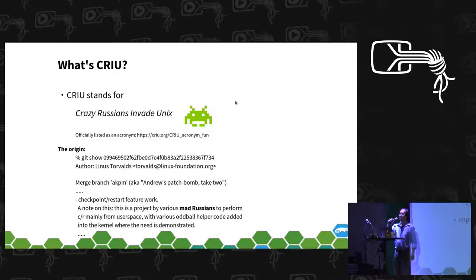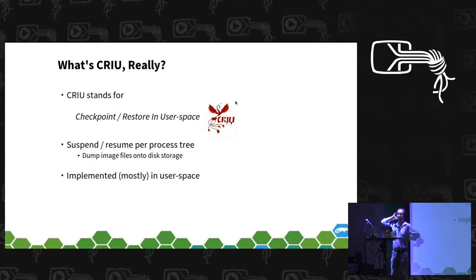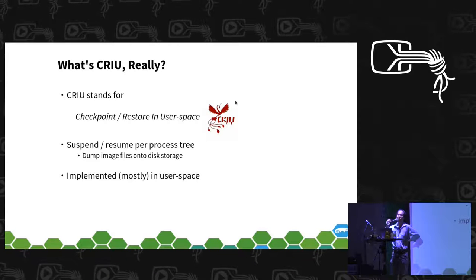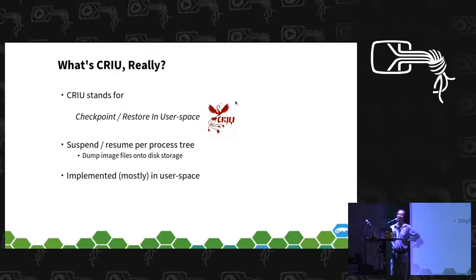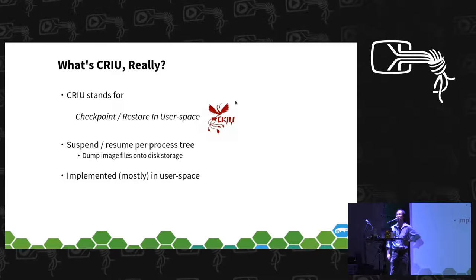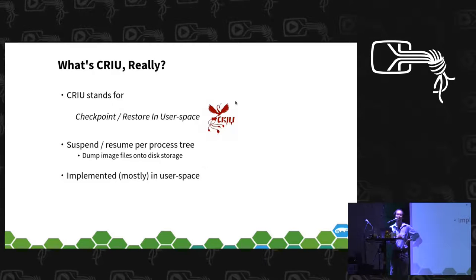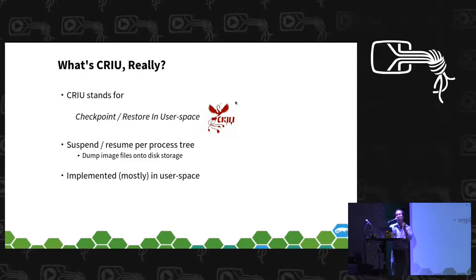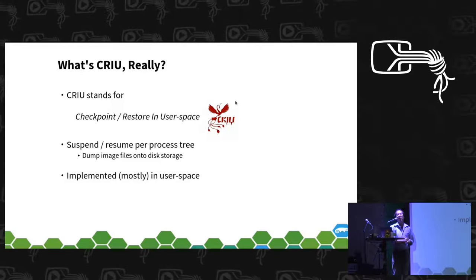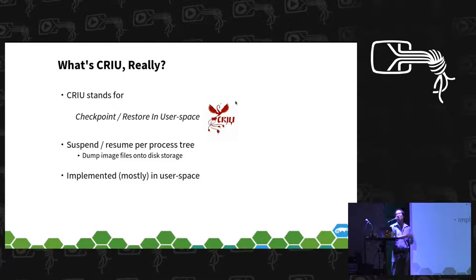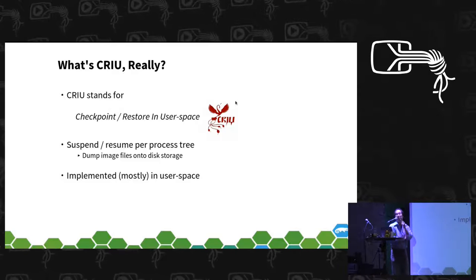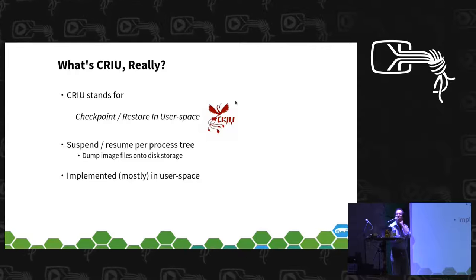The answer was correct. CRIU actually stands for Checkpoint/Restore In Userspace. This is a tool to allow you to kind of suspend and resume each user space process or process tree — or more accurately, it's a hibernate-resume of your process. You can dump your running process or process tree to disk storage, and at any time later you can restore and restart the dumped process again.